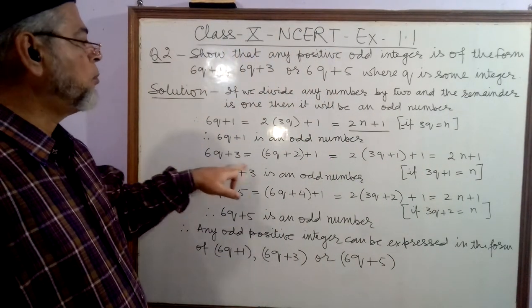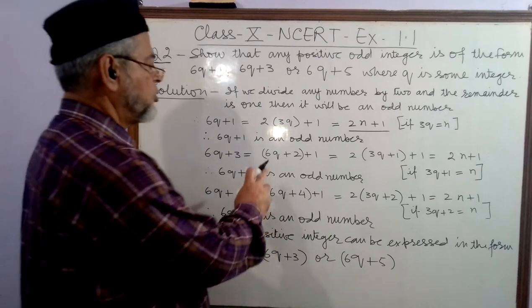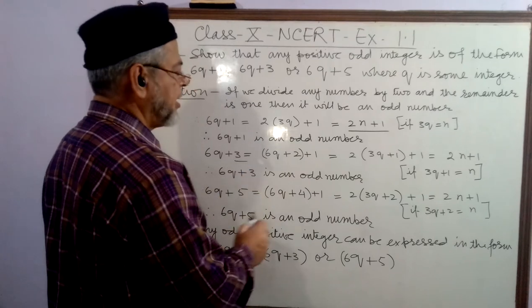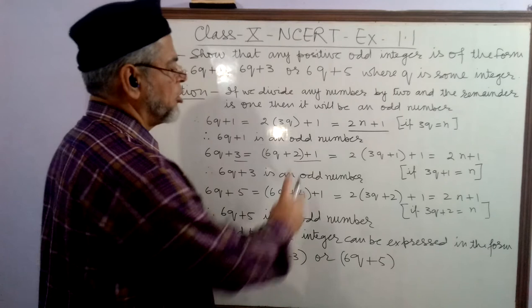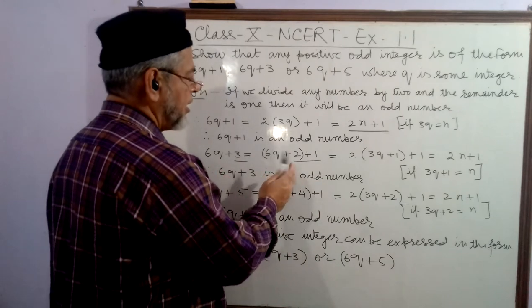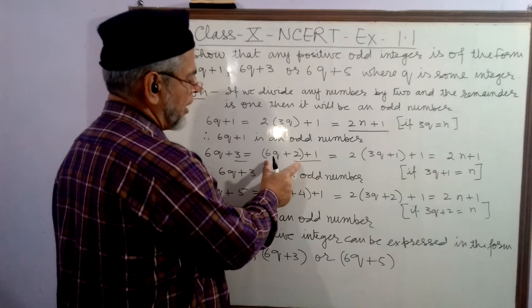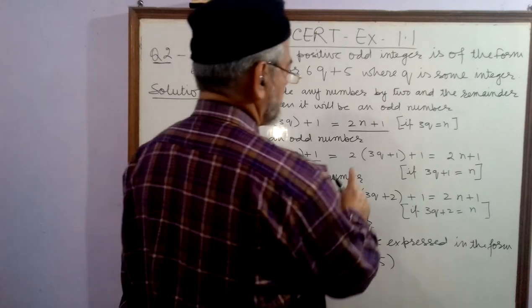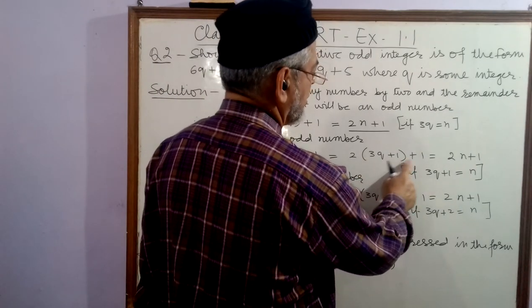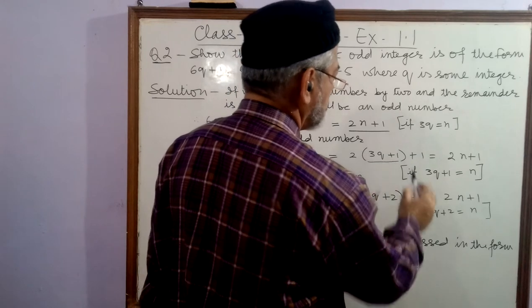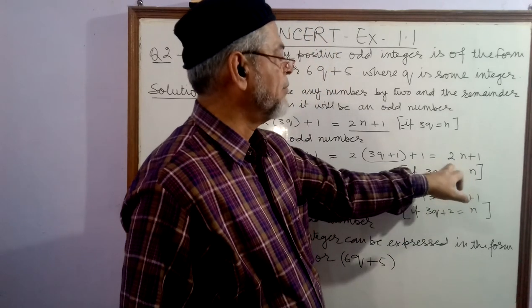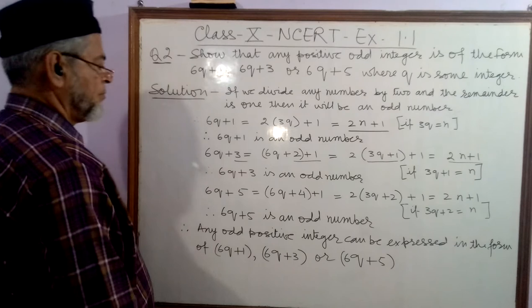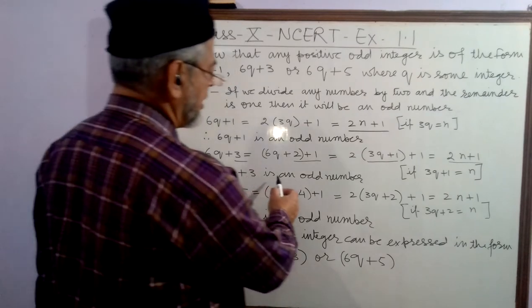Now, we take 6q plus 3. So, 6q plus 2 plus 1. Here, I have split 3 into two parts, 2 and 1, because 2 plus 1 equals 3. Now, I take 2 as common number from 6q plus 2. So, 2 into 3q plus 1, plus 1. If I replace 3q plus 1 with N, it will become 2N plus 1. That means the standard form of an odd number. That means 6q plus 3 is an odd number.